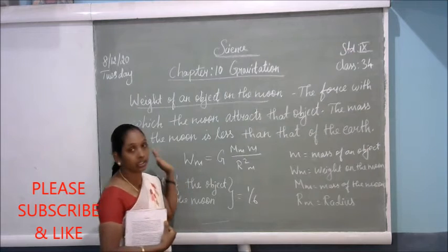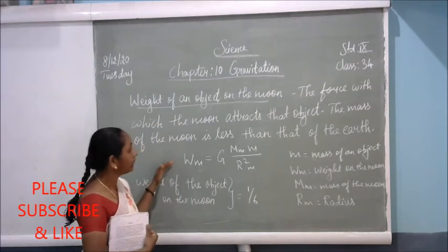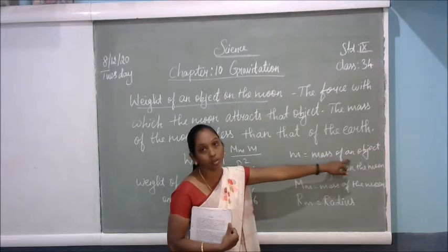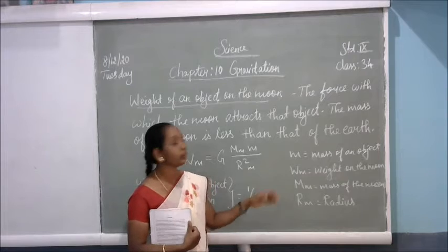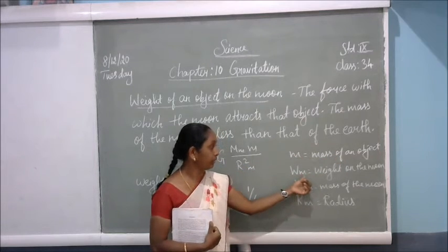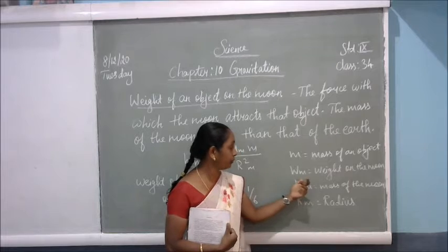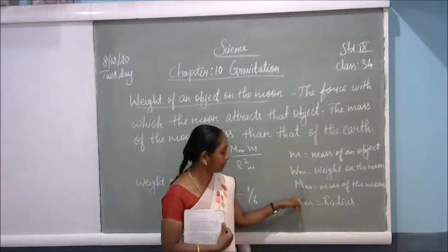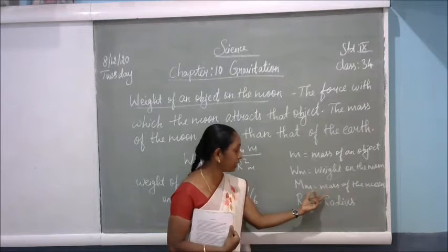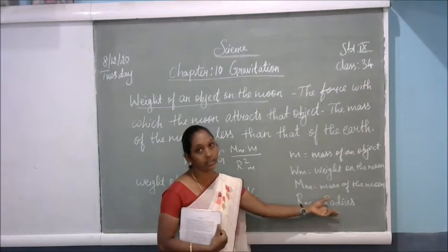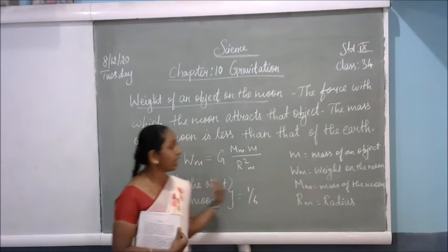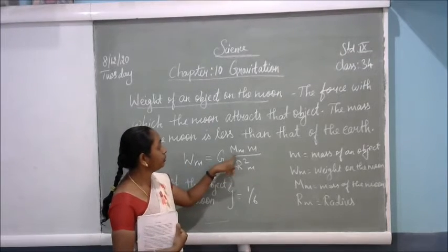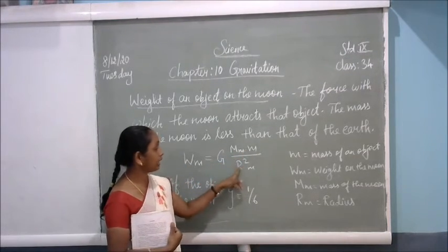How do we calculate the weight on the moon? Here, small m is denoted as the mass of an object present on the moon. Wm is the weight on the moon — that is the object's weight on the moon. Capital M is the mass of the moon, and rm is the radius of the moon. All these we have to apply in the formula: Wm = G × m × M / r²m.